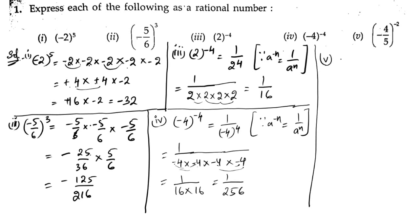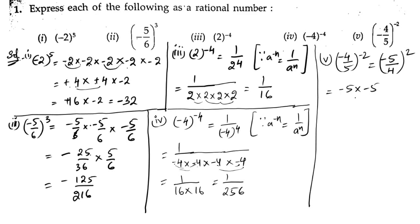Fifth bit: minus 4 by 5, whole to the power of minus 2. To remove the negative power, we write the reciprocal of minus 4 by 5, which is minus 5 by 4, whole to the power of 2. Writing the reciprocal changes the power to positive. So minus 5 into minus 5 by 4 into 4: minus into minus is plus, 5 fives are 25, 4 fours are 16. The answer is 25 by 16.